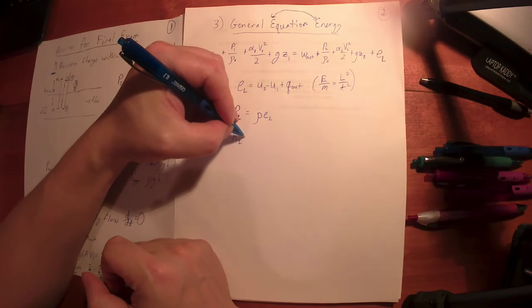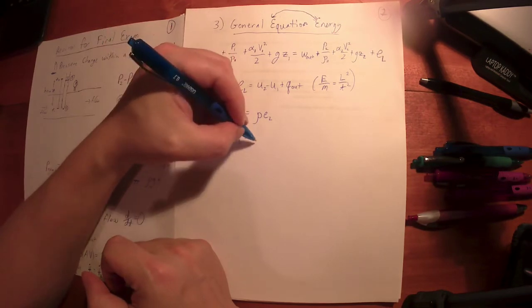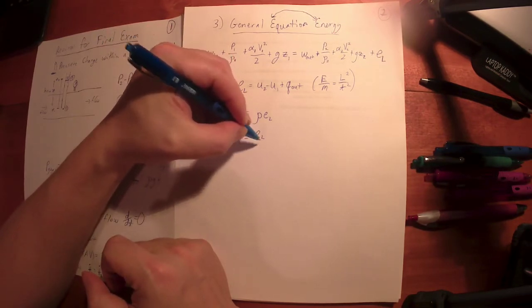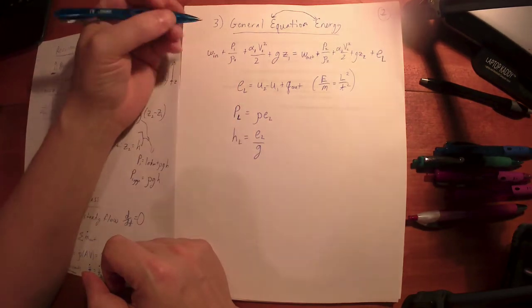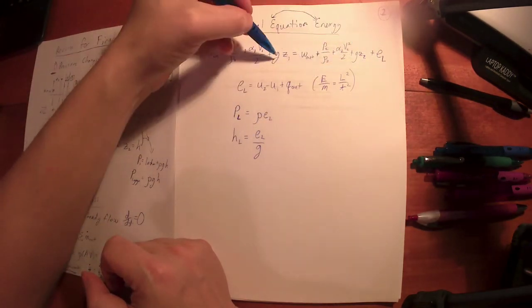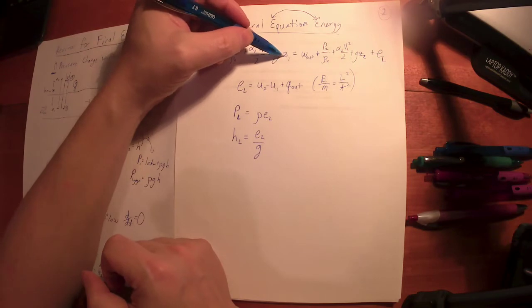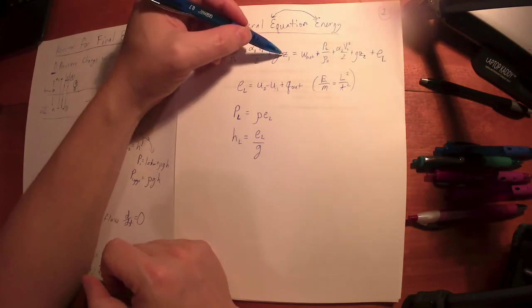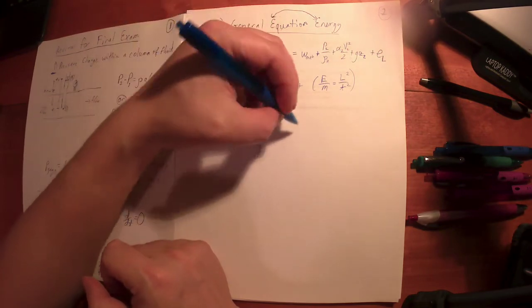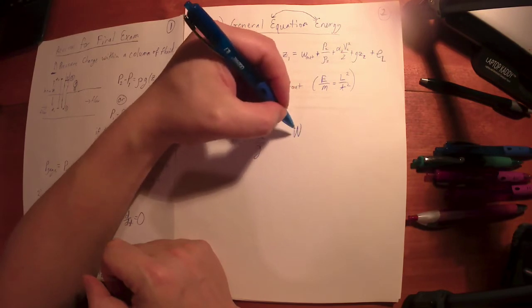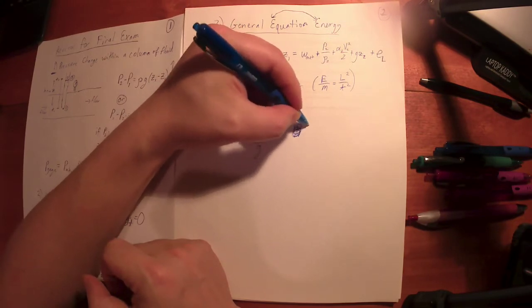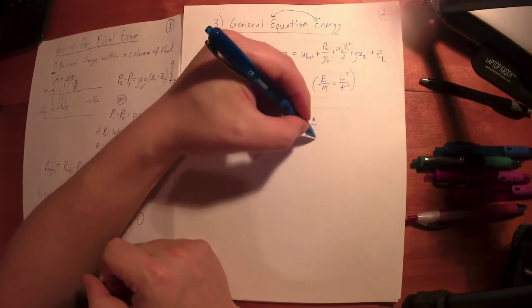And then there's a quantity we call the head loss. The head loss is equal to the energy loss divided by gravity. You can notice this expression here, if I divide each terms by gravity I get units or dimensions of length.